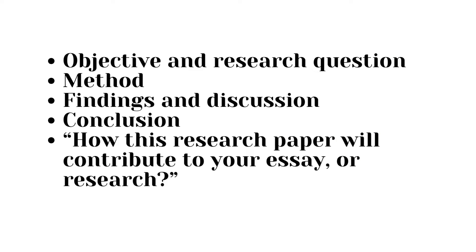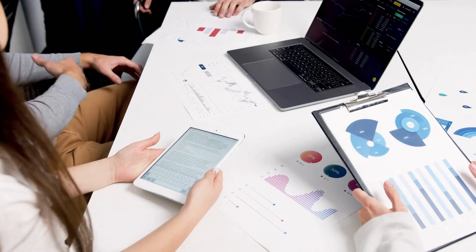Sometimes your university or college provides a specific format for writing an annotated bibliography. For instance, I was once asked to write an annotated bibliography with the following format: first part — objective and research question; second part — method; third part — findings and discussion; fourth part — conclusion; and a final part — how this research paper will contribute to your essay or research.